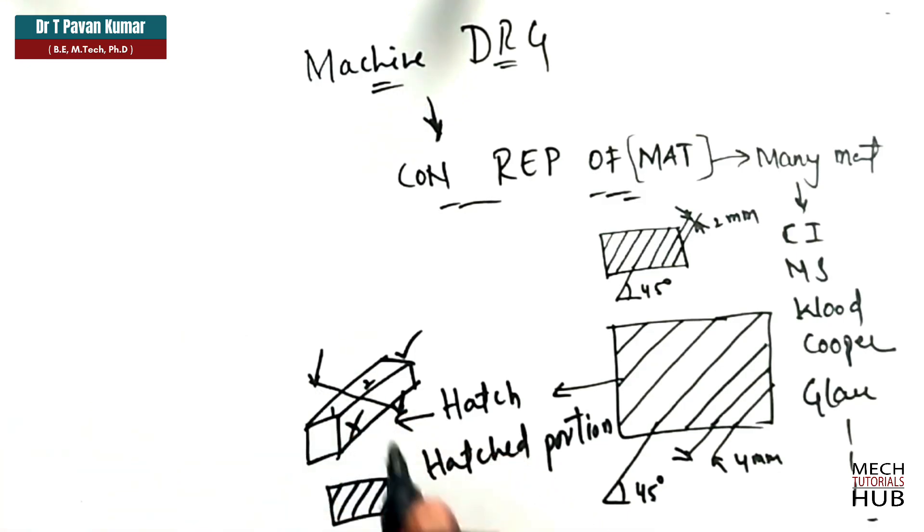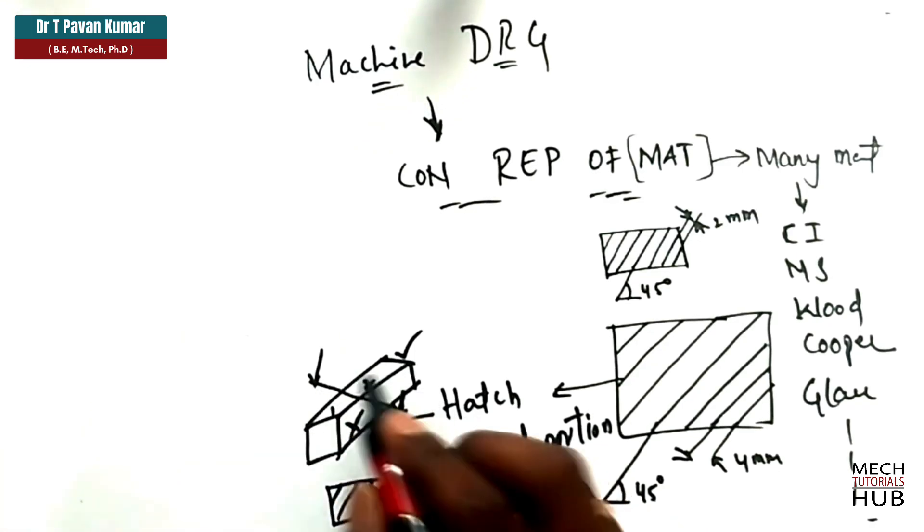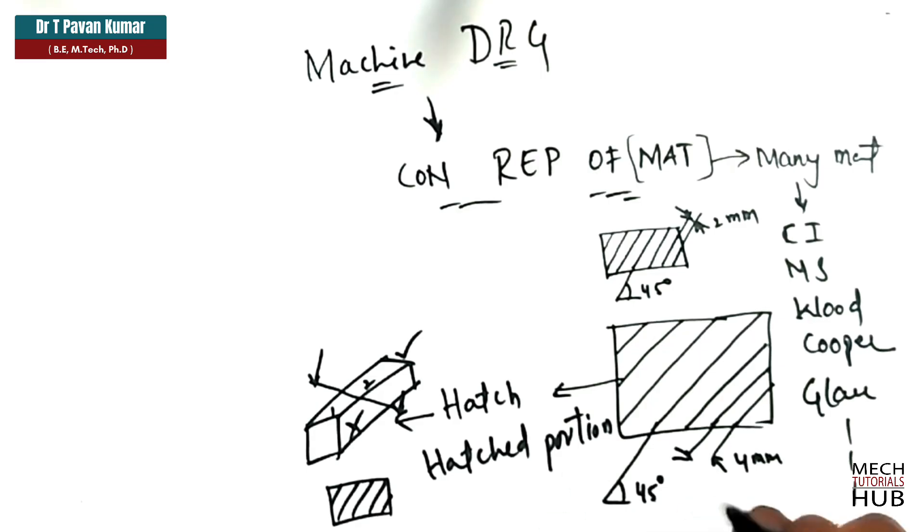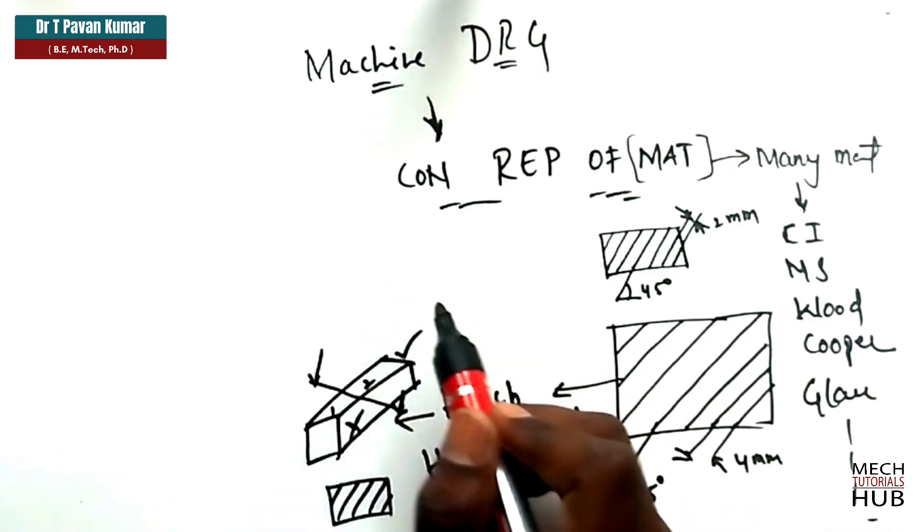If it is glass, again there will be a pattern given. So, for a specific component or a material, the pattern will change. Whenever you section a component, you need to hatch the component. That indicates that it is made of so and so material. Maybe cast iron, maybe wood, maybe mild steel.